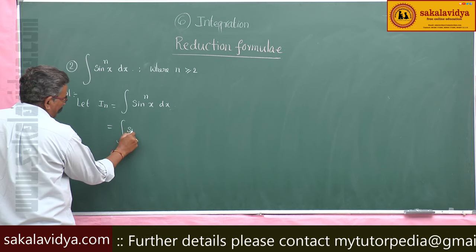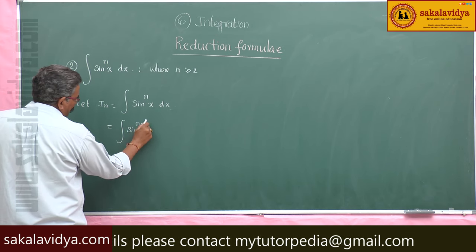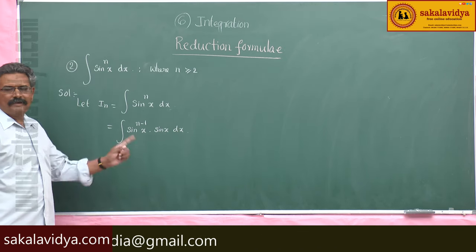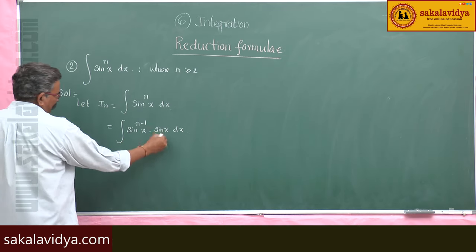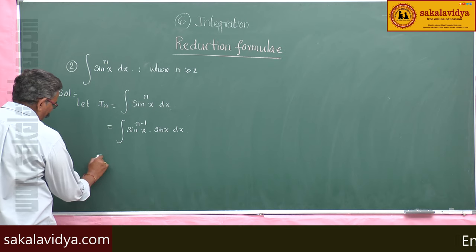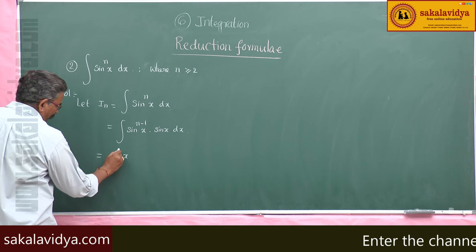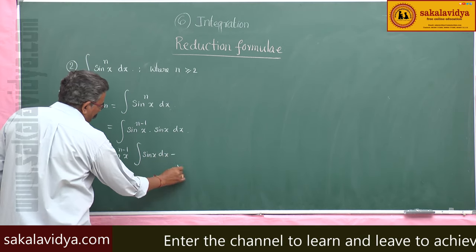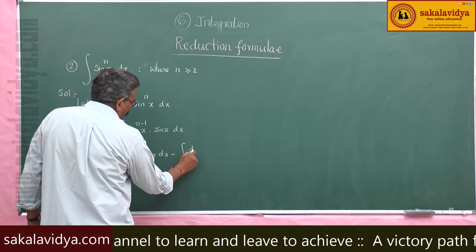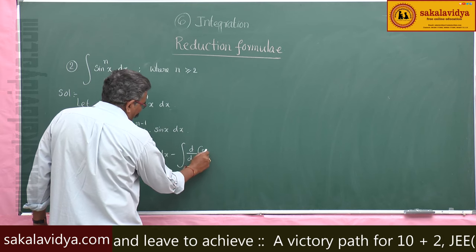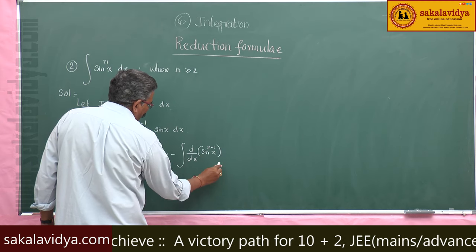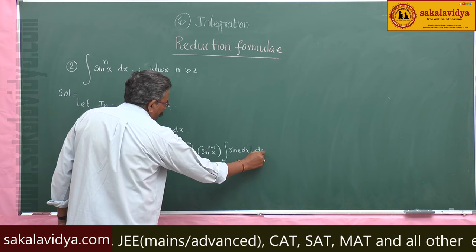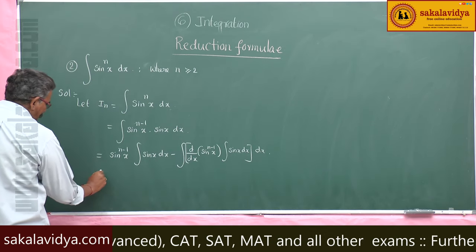This we can write as integral of sin x to the power of n minus 1 into sin x dx. This is the first function and this is the second function — we have to do integration by parts. So: sin x to the power of n minus 1 times the integral of sin x dx, minus the integral of d/dx of sin x to the power of n minus 1 times the integral of sin x dx, whole dx. The integral of sin x is minus cos x.